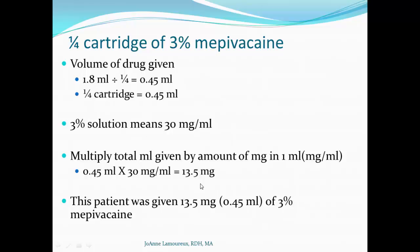Let's look at what happens if you give less than one cartridge. The example is a quarter cartridge of 3% Mepivacaine. A whole cartridge is 1.8 mL divided by 4 equals 0.45 mL. A 3% solution means 30 mg/mL. Multiply 0.45 mL × 30 mg/mL = 13.5 milligrams. So this patient, who received a quarter cartridge of 3% Mepivacaine, has received 13.5 mg, or 0.45 mL, of that drug.